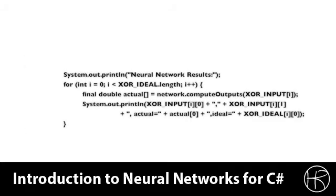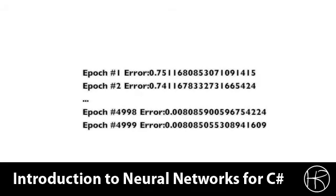The training continues until the neural network is trained. Once the neural network is trained, we display the results. Here you can see a simple loop that loops over all of the training data and displays the expected and the actual results. This shows the neural network actually recognizing the four states of the XOR operator. This is a simple console application that we just implemented.